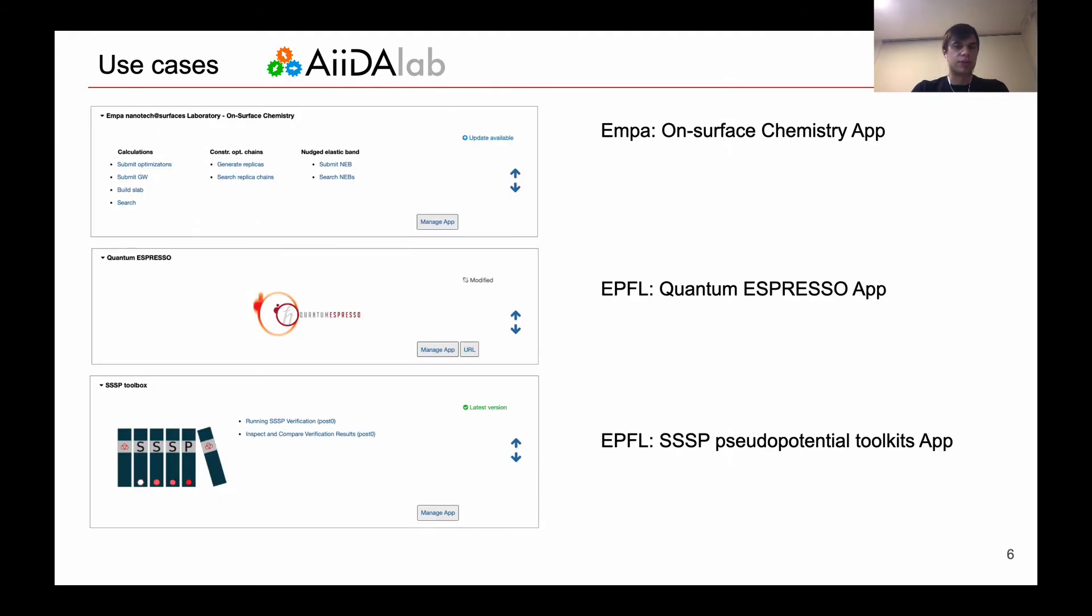The rest of the presentation will be dedicated to examples of AiiDAlab applications. So I will show three. First one will be EMPA on Surface Chemistry app to study molecules on surfaces. The second one will be Quantum Espresso application to run Quantum Espresso simulations. And the last one will be SSSP Pseudopotential Toolkit app.